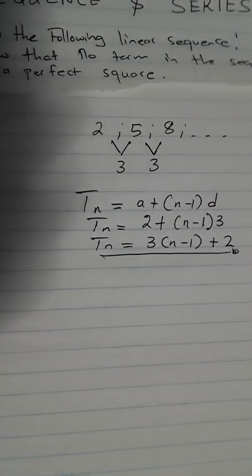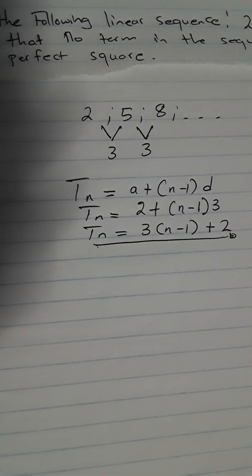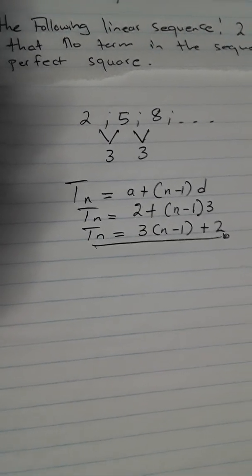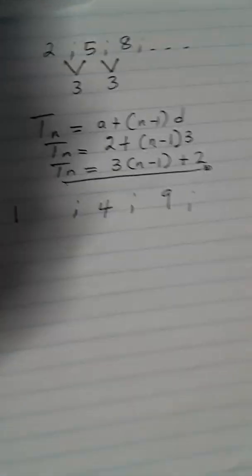We have to show that no term in this sequence will become a perfect square. What are perfect squares? We know that 1 is a perfect square, 4 is a perfect square, 9 is also a perfect square, 16 is also a perfect square, and so forth. These are perfect squares.